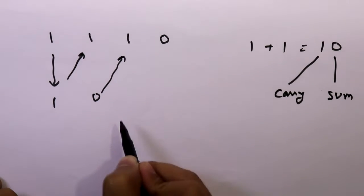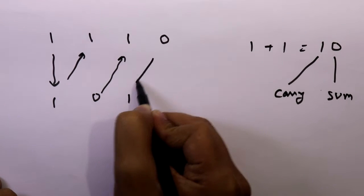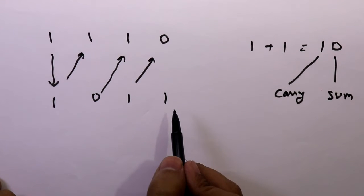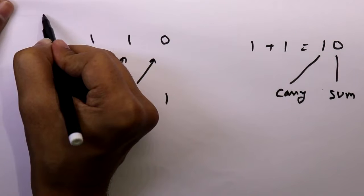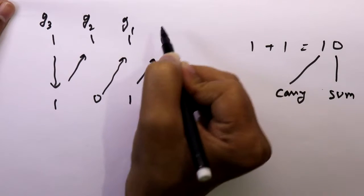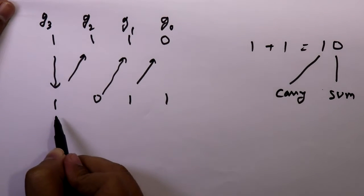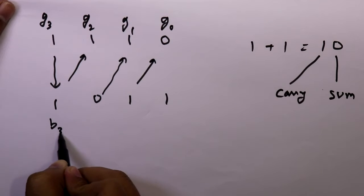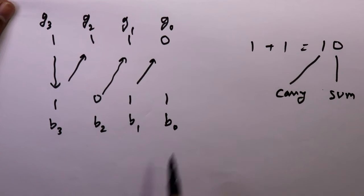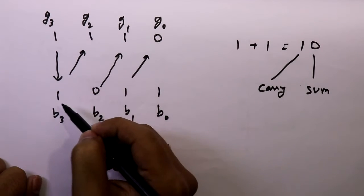Then we add this 0 with this 1: 0 plus 1 is 1, and 1 plus 0 is also 1. So this is our required binary number. The input bits are g3, g2, g1, g0 and the output bits are b3, b2, b1, b0.